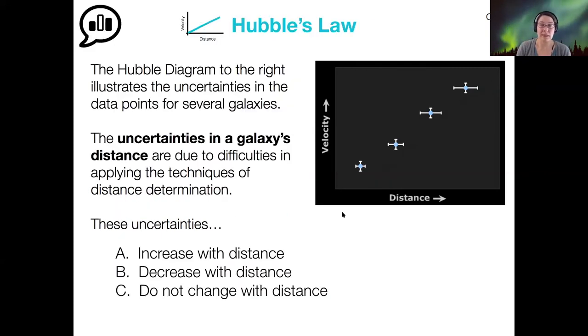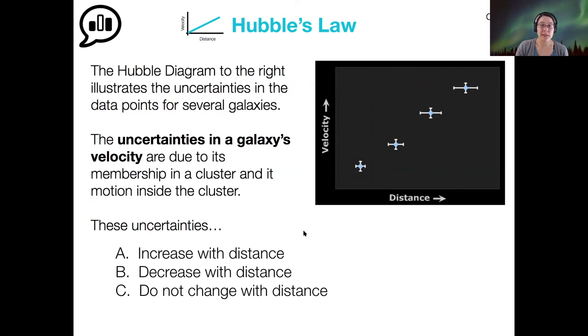When we look at a plot of Hubble's law, we're looking at the velocity and the distance, and there's some error in the velocity from calculating the Doppler shift using the spectral lines. And there could be some error in the measured distances. Looking at this Hubble diagram on the right, does it look like the uncertainties in a galaxy's distance increase with distance, decrease, or don't change? It looks like they increase with distance. The error bars are getting larger and larger as we increase to the right in distance.